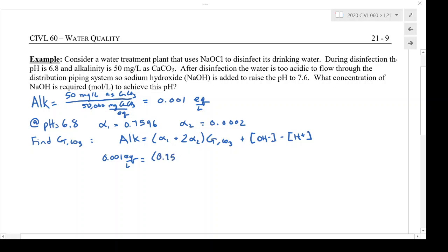And then I put in the alpha values that I got off the table. So I have 0.7596 plus 2 times 0.0002, and these are at 6.8 pH. You could see here that we could probably ignore the carbonate in this problem, but I'm going to keep it in. My pH is 6.8 so hydroxide will be 10 to the minus 7.2 and this is 10 to the minus 6.8.